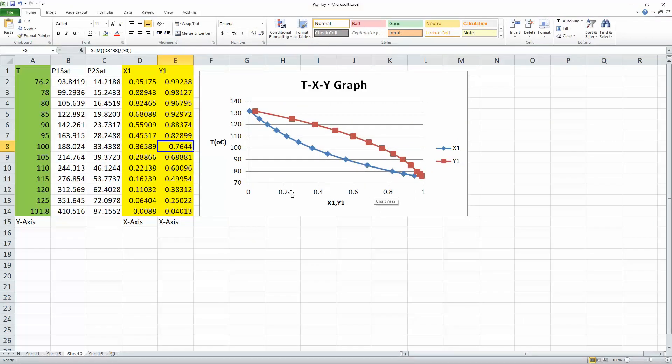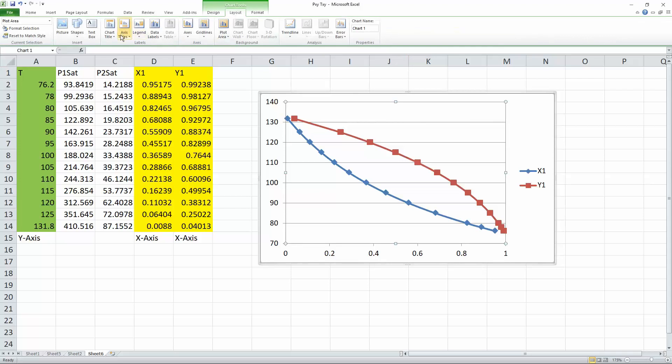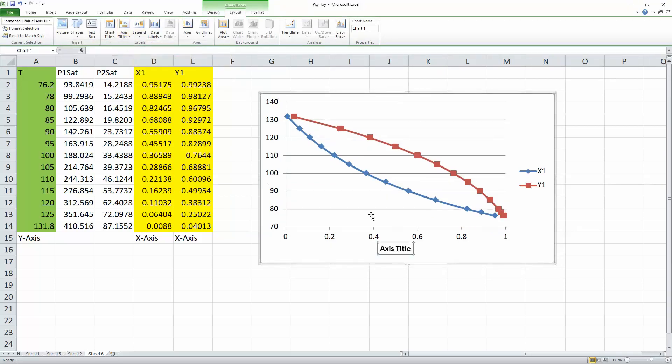What else are we missing? We're missing an axis title. So x1 comma y1 and a y title, t in Celsius. So we click the graph. So we select the graph, hit layout, go to axis title, primary horizontal axis below the axis. And we will call it x1 comma y1.